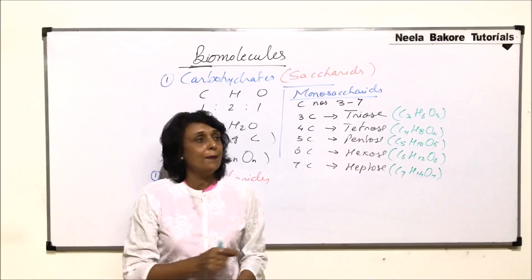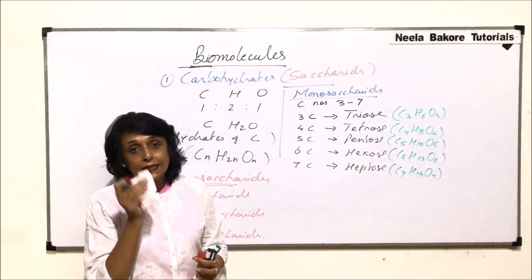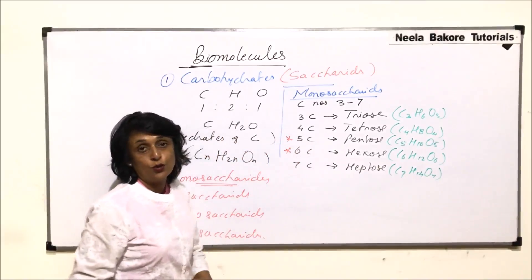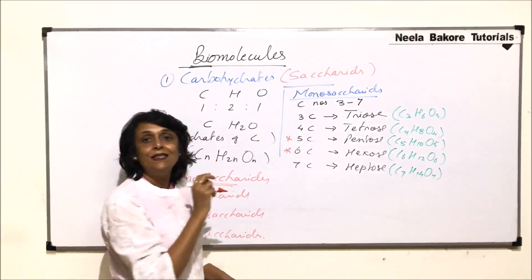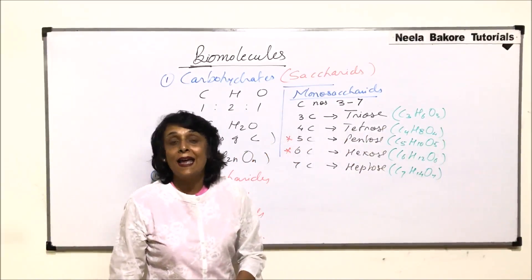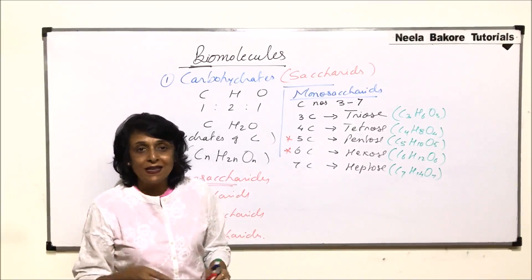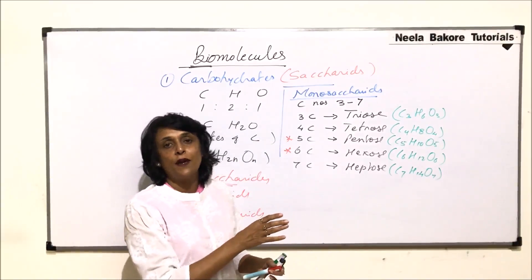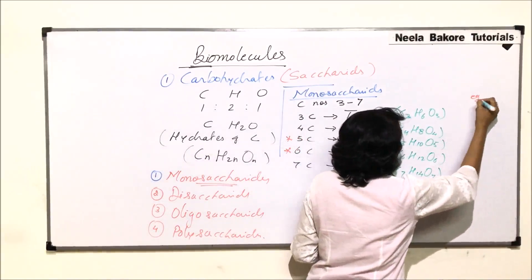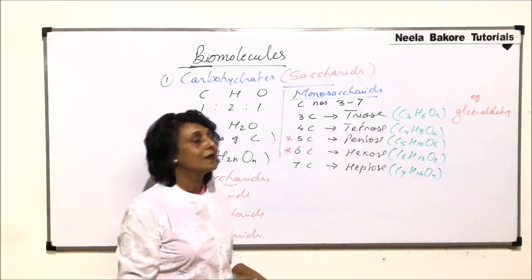We will write at least one example of each sugar type. We will also be studying pentose and hexose sugars in detail, as they are the most important. For triose sugars — if you recall glycolysis — glucose splits into two three-carbon compounds: glyceraldehyde and dihydroxyacetone. Those two are triose sugars, so glyceraldehyde is our example for triose.